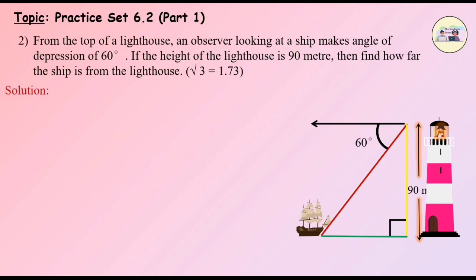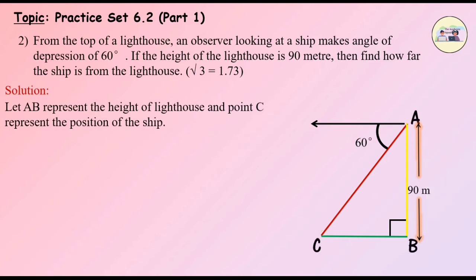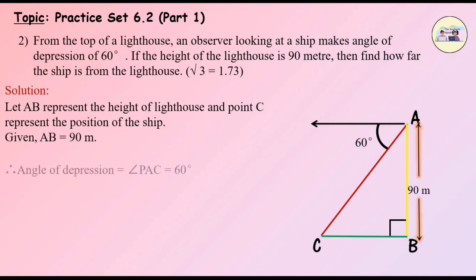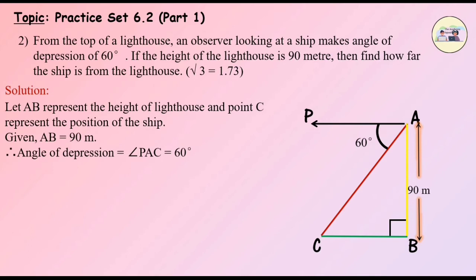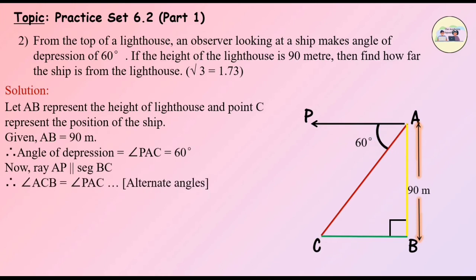Solution: Let AB represent the height of the lighthouse and point C represent the position of the ship. Given AB is equal to 90 meters. Since the observer is looking at a point which is at a lower level, we need to consider the angle of depression, and the angle of depression is always measured from the horizontal line. Therefore, angle of depression equals angle PAC, which equals 60 degrees. Now, ray AP is parallel to segment BC. So angle ACB equals angle PAC since they are alternate angles. Therefore, angle ACB equals 60 degrees.